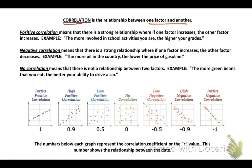Back to your notes. Now a correlation is a relationship between one factor and another. A positive correlation means that there is a strong relationship where if one factor is increasing, the other is also increasing. Example: the more involved in school activities you are, the higher your grades. A negative correlation means that there is a strong relationship. If one factor is increasing, then the other one decreases. So an example is the more oil in the country, the lower the price of gasoline. And then finally, no correlation means there is not a relationship between those two factors. The more green beans that you eat, the better your ability to drive a car. So they may just not have a relationship between the other.